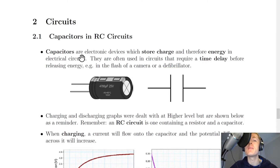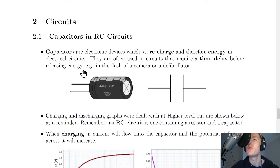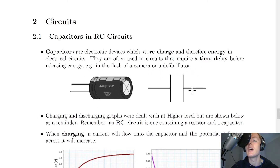You should remember that capacitors are electronic devices which store charge and therefore energy in electrical circuits. They are often used in circuits that require a time delay before releasing energy, for example in the flash of a camera or a defibrillator. Here's an example of what a capacitor looks like in real life, and this is the circuit symbol you would see in a circuit diagram.